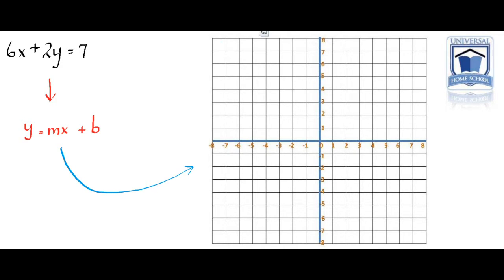What is the first thing we do? We have to look at the equation, 6x plus 2y equals 7. We've got to isolate that 2y by itself, because we're looking for y equals. So we want to isolate 2y.